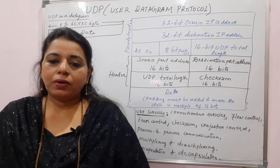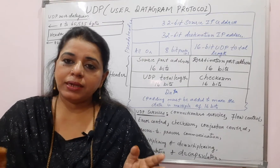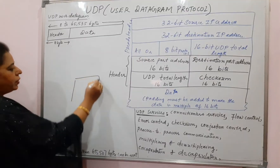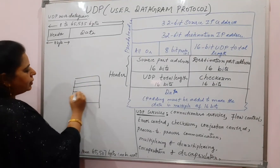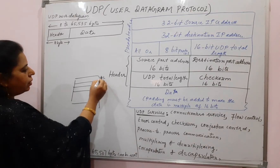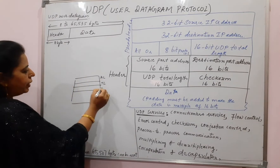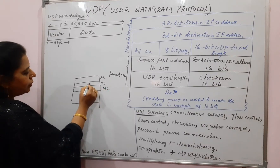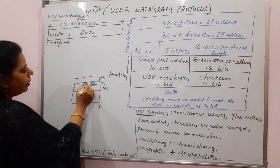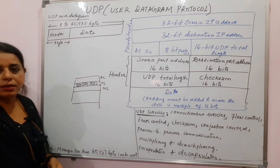In the transport layer, you can see three different protocols present. In the TCP/IP protocol suite, if you try to recall all the layers and the protocols are mentioned. Suppose if this is the application layer, normally this will be on top at the sender side, then the transport layer, network layer. Here you can see the protocols as TCP, UDP, and SCTP. These three protocols are shown in the transport layer.